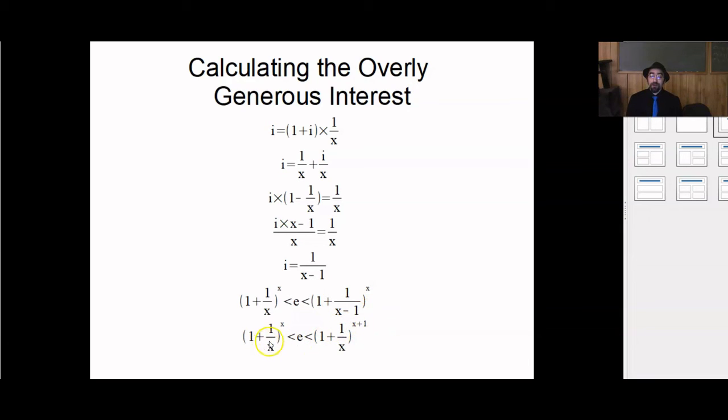Either way, I get that for any whole number x, or any positive number x, (1 + 1/x)^x is less than e, but (1 + 1/x)^(x + 1) is more than e. And that gives me a rather narrow window. Assuming x is a large number, I can make that window as narrow as I want.